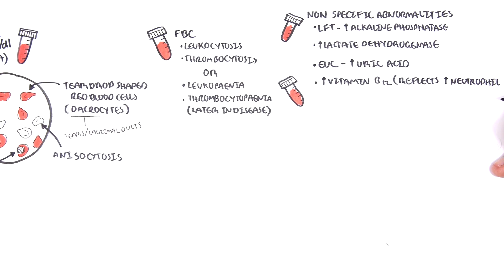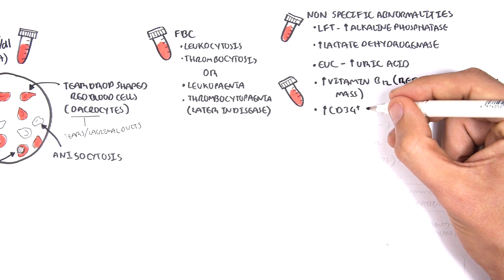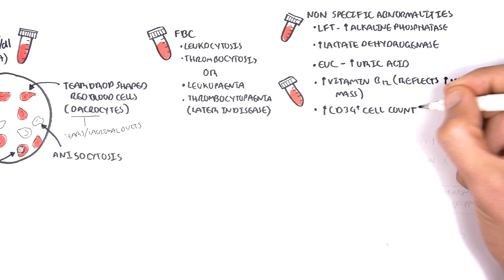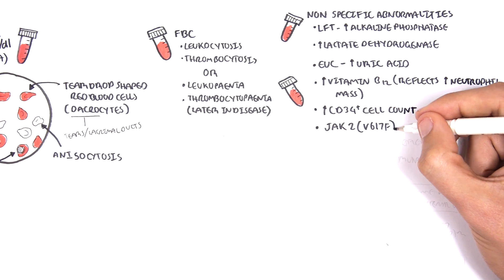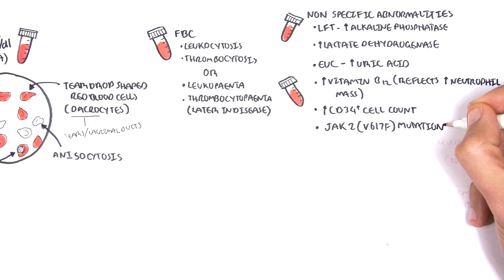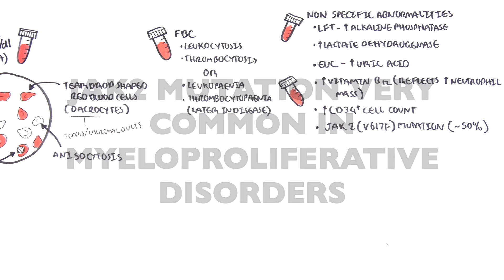Another investigation in primary myelofibrosis is checking for CD34. CD34 cell count is increased in some primary myeloproliferative patients. Also, the JAK2 mutation is found in about 50% of primary myelofibrosis. Important note to make here is that JAK2 mutation is a common feature of most of the classic myeloproliferative disorders.